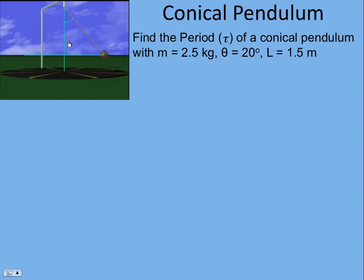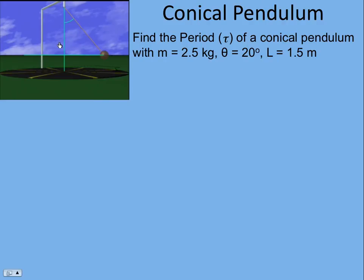And what we want to do is figure out what is the period. How much time does it take this conical pendulum to go around once if the mass here is 2.5 kilograms and the angle is 20 degrees, and that angle would be this angle to the vertical, and the length of the conical pendulum is 1.5 meters.